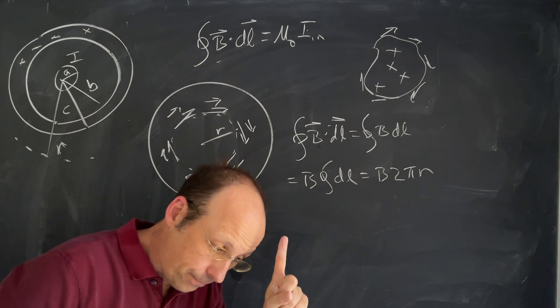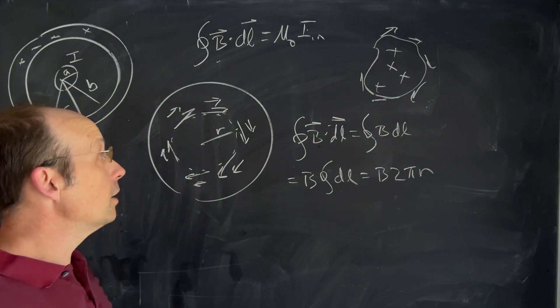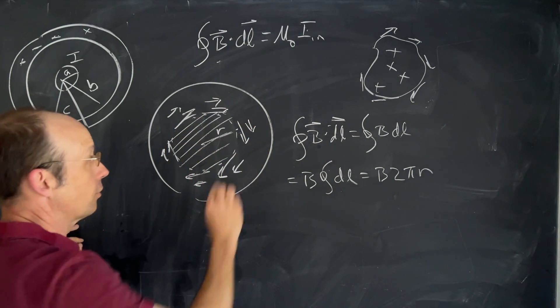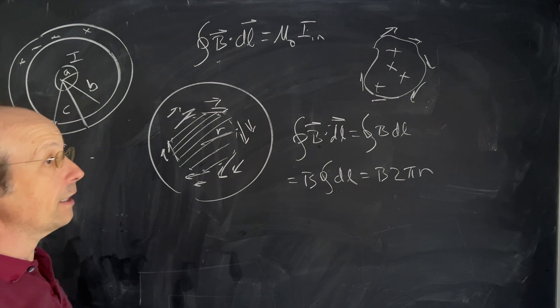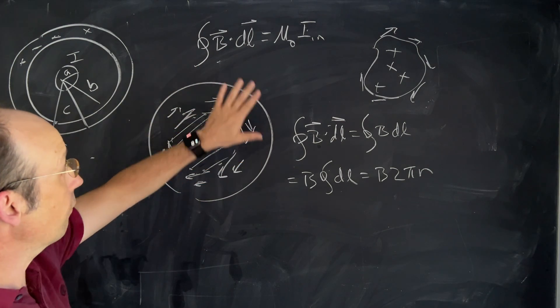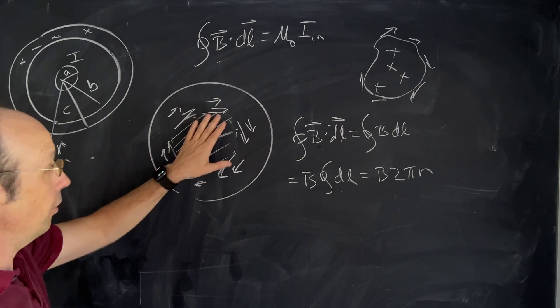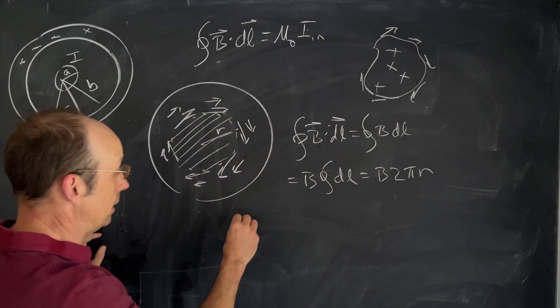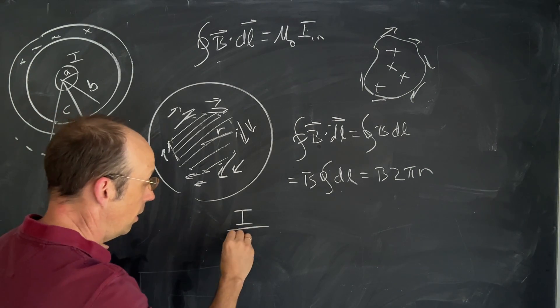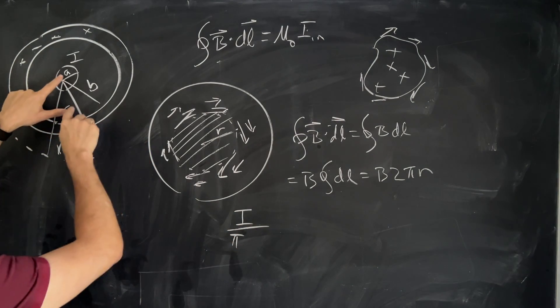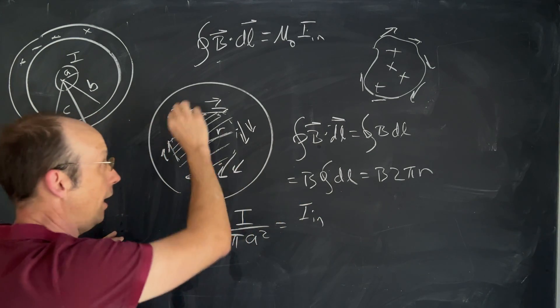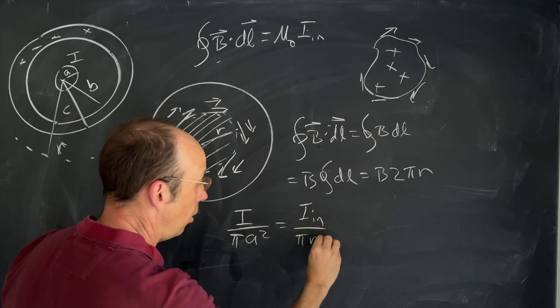That's the path integral. Now I need to do the IN. Here we have to find out how much current passes through this circular loop. We're going to make the assumption that the current density is constant. So the current per unit area right here is the same as the current per unit area right there. So let's write this as the total current divided by the total area πa²